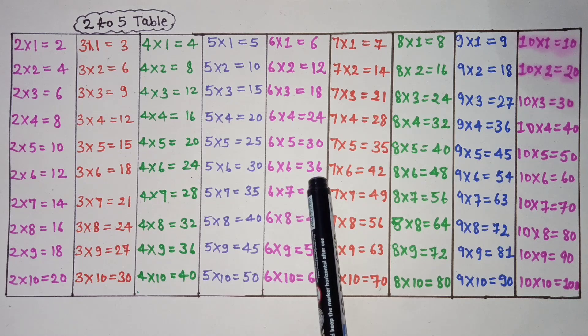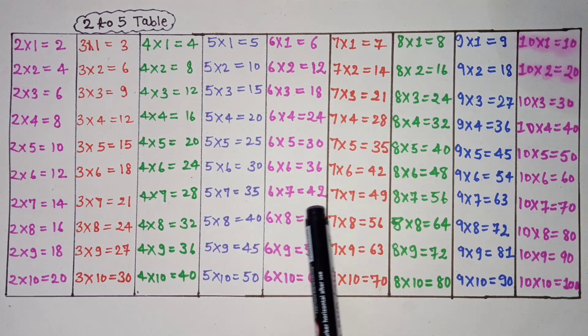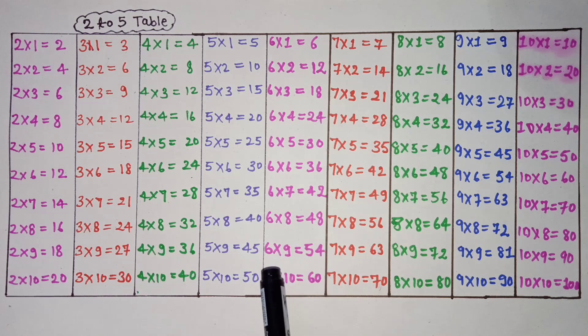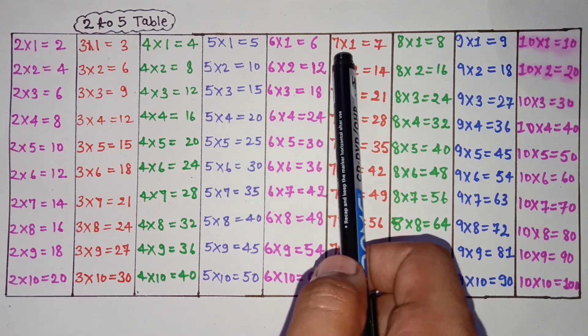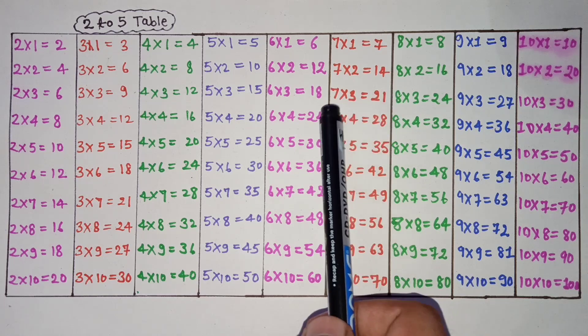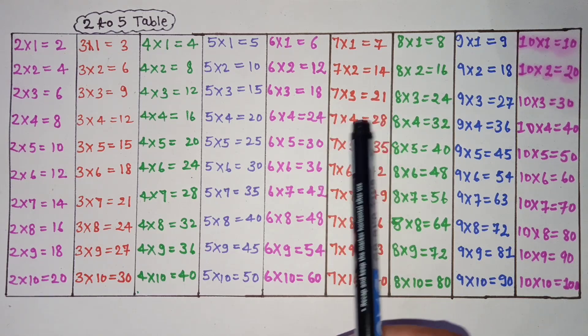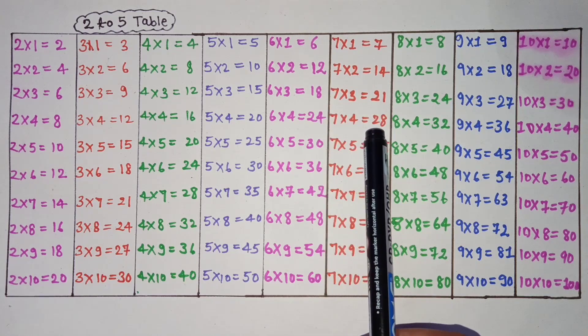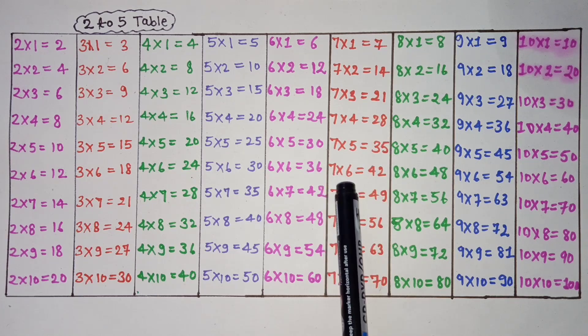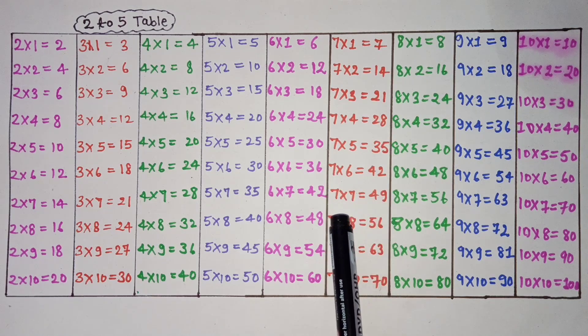6 times 6 is 36, 6 times 7 is 42, 6 times 8 is 48, 6 times 9 is 54, 6 times 10 is 60. 7 times 1 is 7, 7 times 2 is 14, 7 times 3 is 21, 7 times 4 is 28, 7 times 5 is 35, 7 times 6 is 42, 7 times 7 is 49.